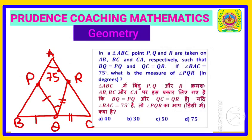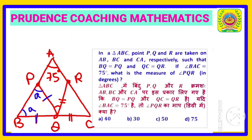In triangle PBQ, PQ is equal to BQ. Since angles opposite to equal sides are equal, if one base angle is A, the other is also A. Similarly, in triangle QRC, QR is equal to QC, so if one base angle is B, the other is also B.